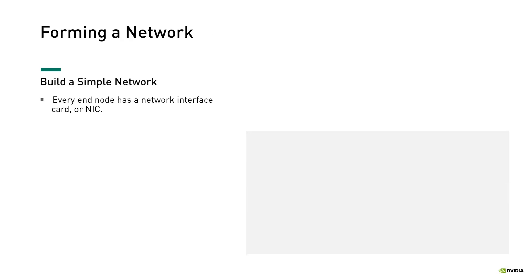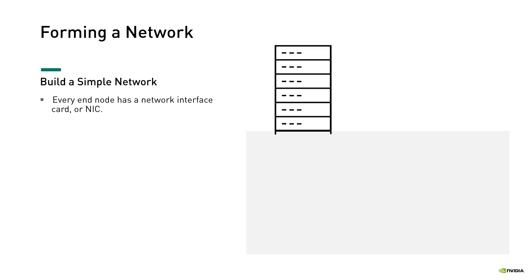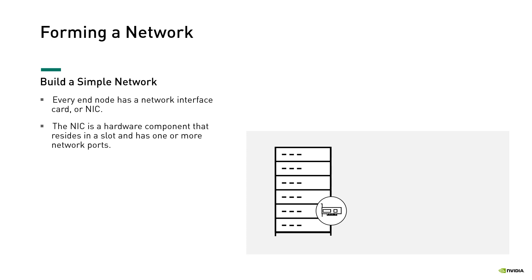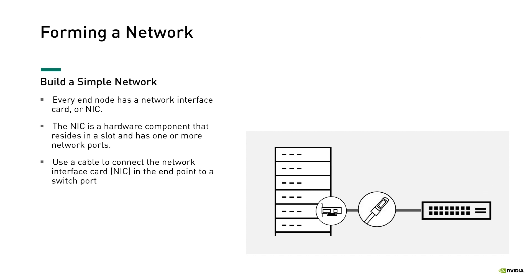Let's see how a simple network is formed. Every end node has a network interface card, or NIC. The NIC is a hardware component that resides in a slot and has one or more network ports. The next step would be plugging a cable into the NIC port on one end and into a switch port on the other end. Now we have the end nodes physically connected. But how do they communicate?